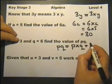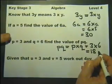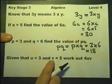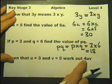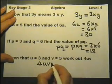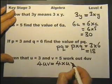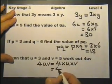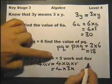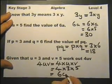Which in this case is 3 times 6. Given that u equals 3 and v equals 5, work out 4uv. So 4uv means you multiply 4 by the value of u by the value of v, which is 4 multiplied by 3 multiplied by 5. 4 times 3 is 12, and 12 times 5 is 60.